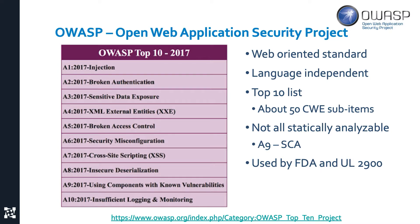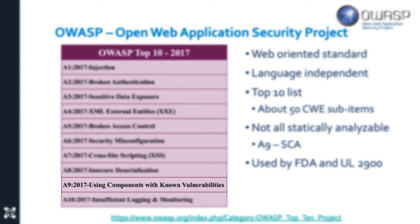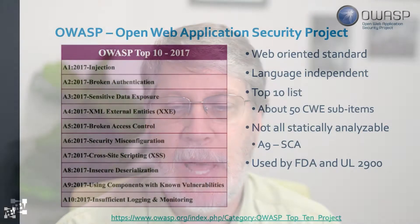One thing to remember is that number 9 as part of the Top 10 is one that isn't checkable using a static code analysis tool. It's really all about what are the components in the software that you're delivering. For example, if you're using an open source project and it happens to have a known vulnerability, is there a patch for that and have you applied it?